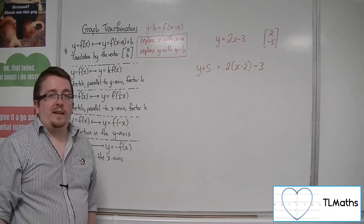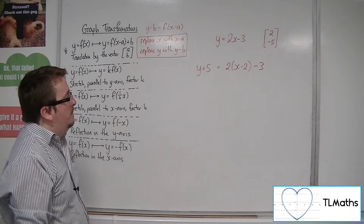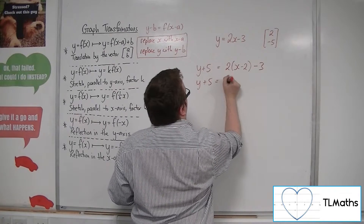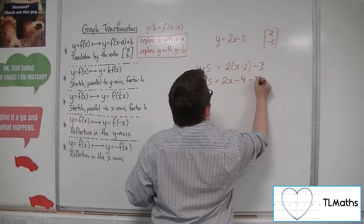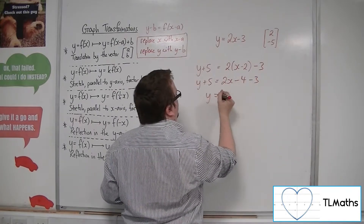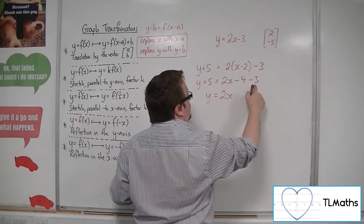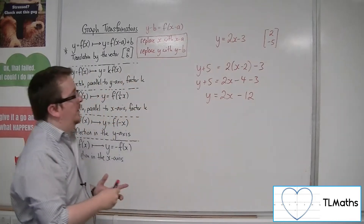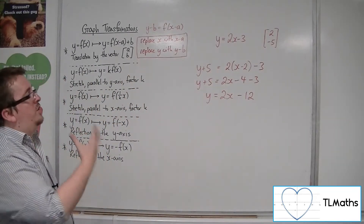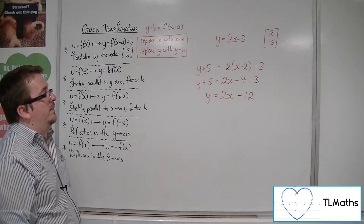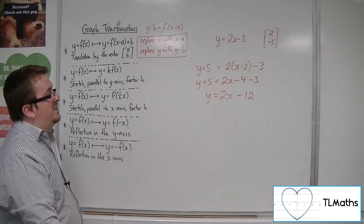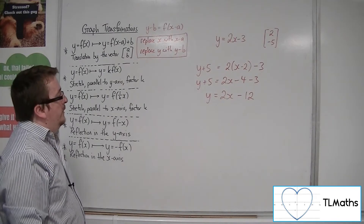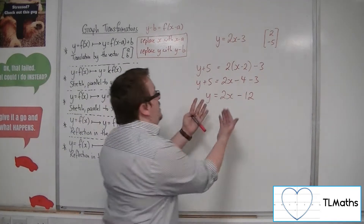Now, that's not a particularly nice looking equation, but if you multiply out the bracket and then group terms together — take the 5 from both sides — we've got minus 4, take away 3 is minus 7, take 5 is minus 12. And that would be the new equation of my line. I have translated it by the vector (2, -5). So that would be the new one.